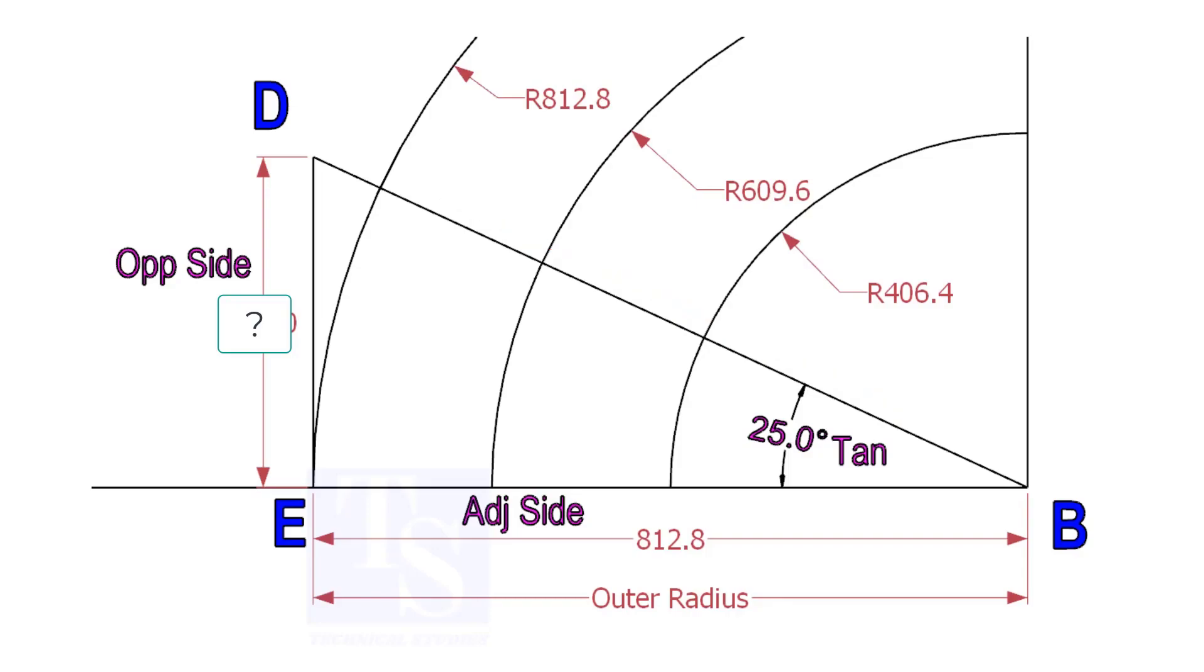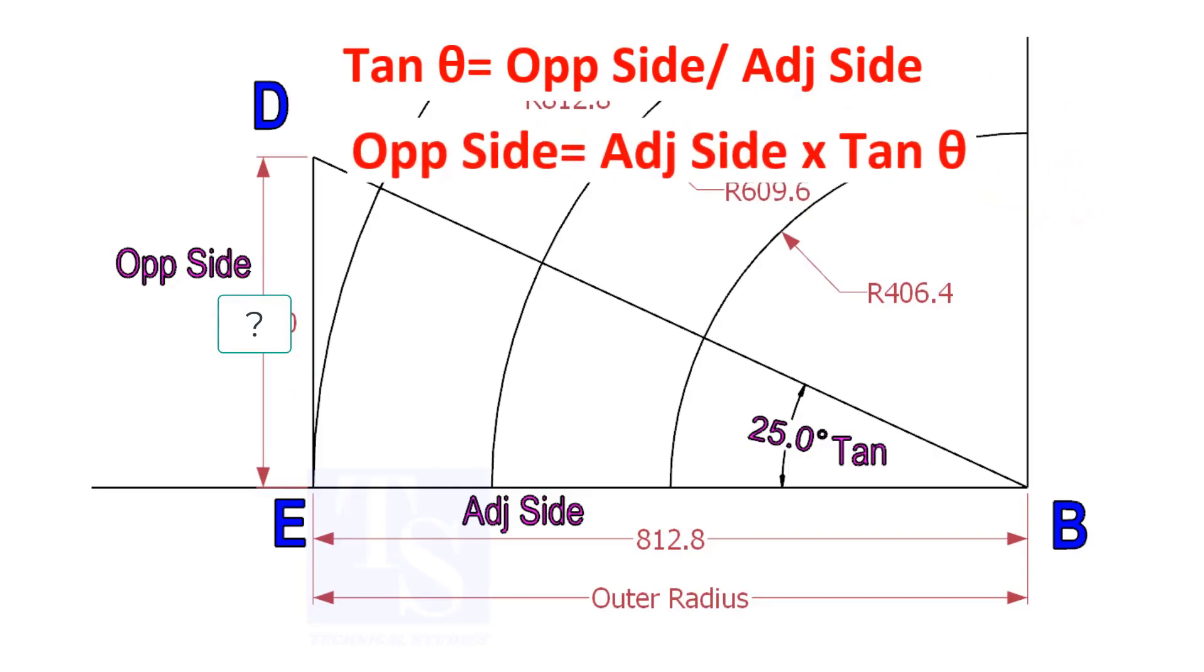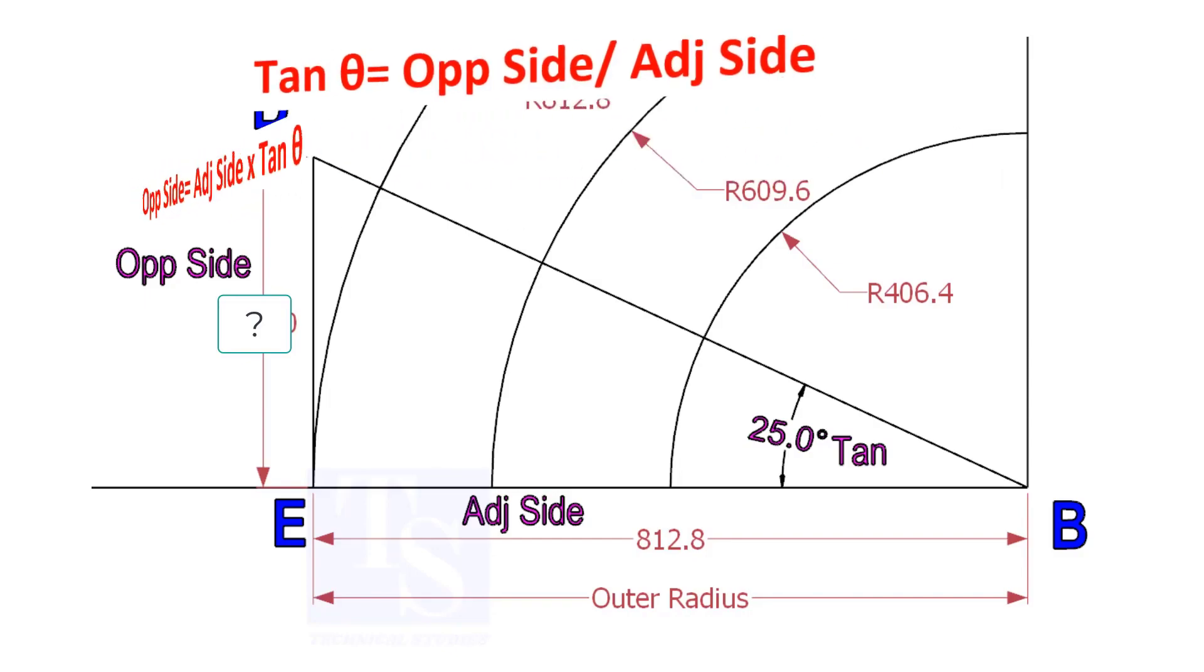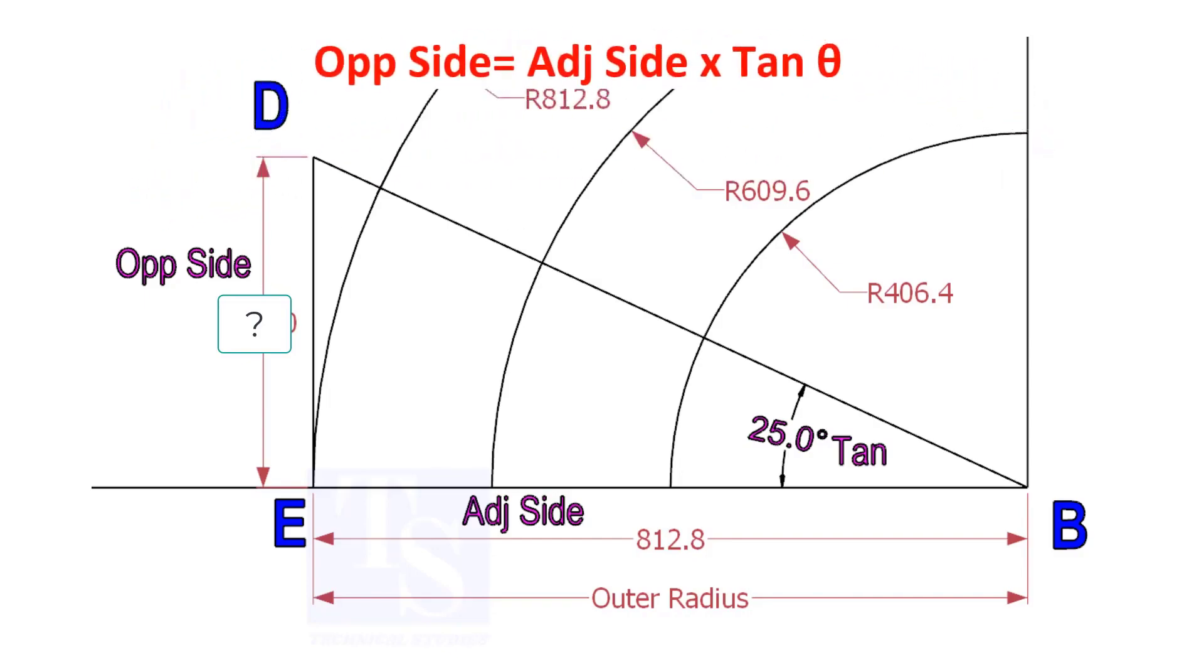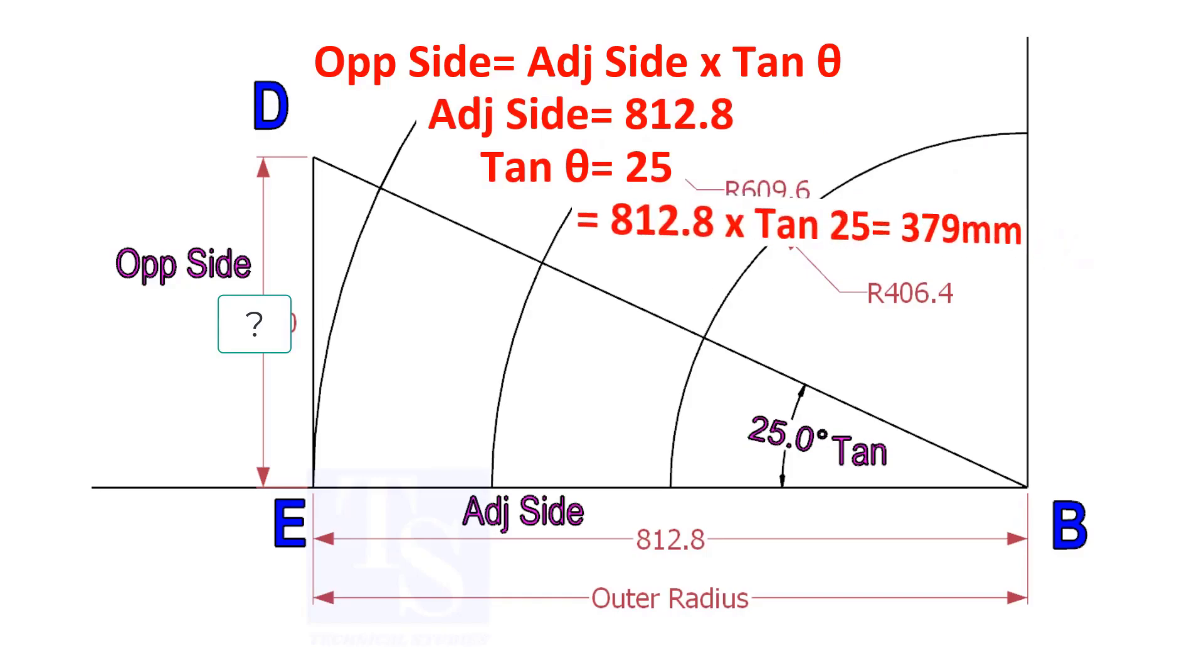To draw the line DB, we need to know the length of the line ED. To calculate ED, we need to apply the formula: tan-theta equals opposite side divided by adjacent side. Opposite side equals adjacent side multiplied by tan-theta. 812.8 into tan-25 equals 379 millimeters.